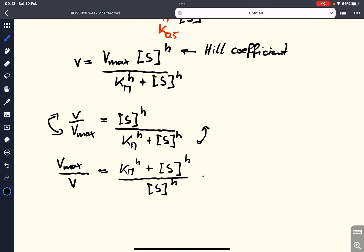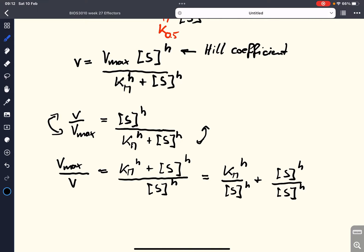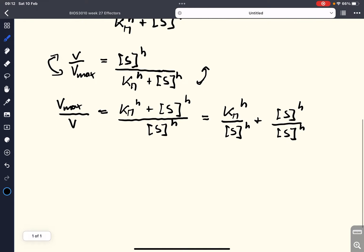And we can split the fraction and we get Km to the power of H divided by S to the power of H plus S to the power of H divided by S to the power of H. And that, of course, equals Km to the power of H divided by S to the power of H plus 1.